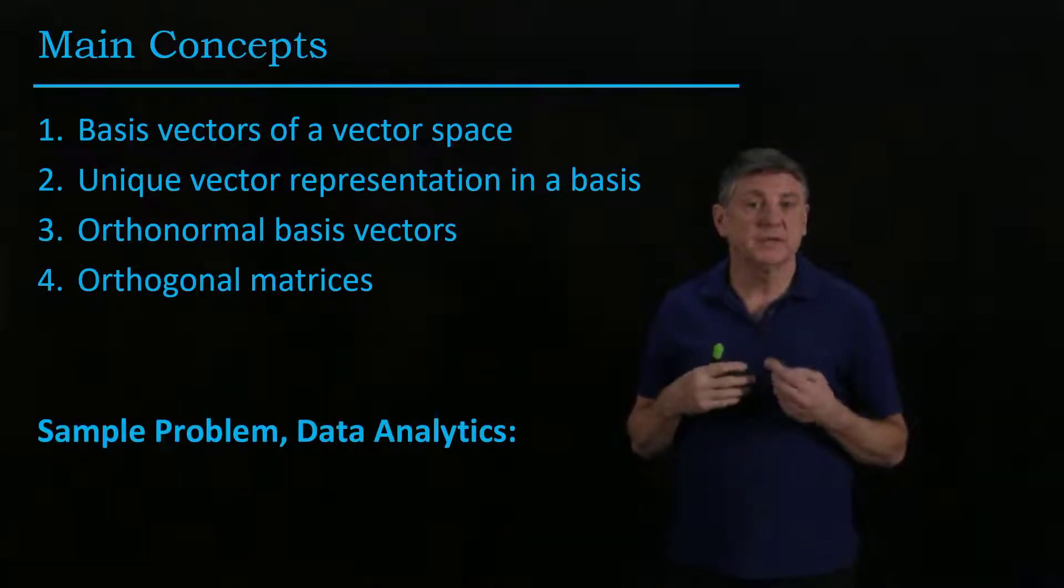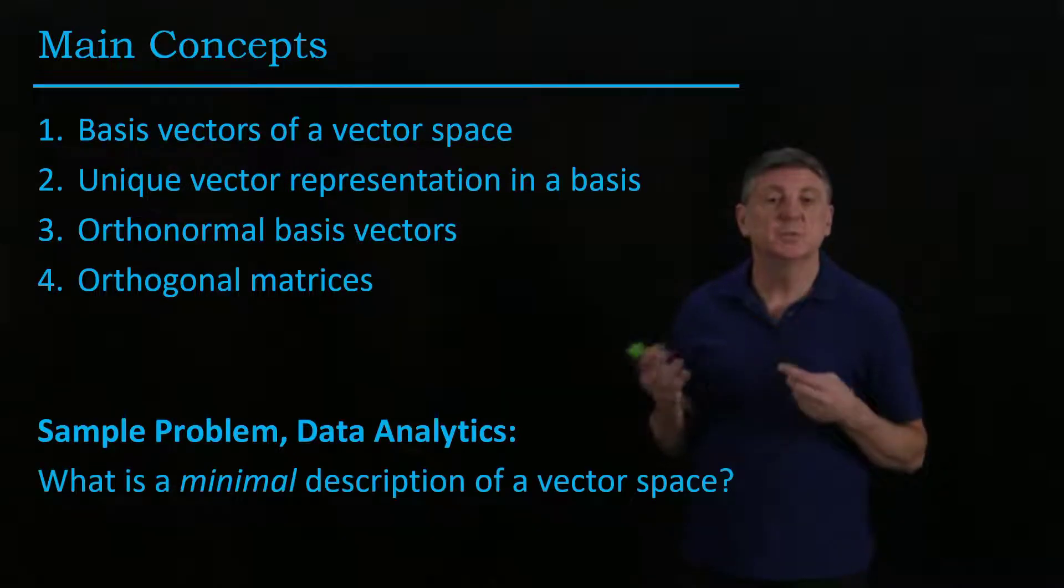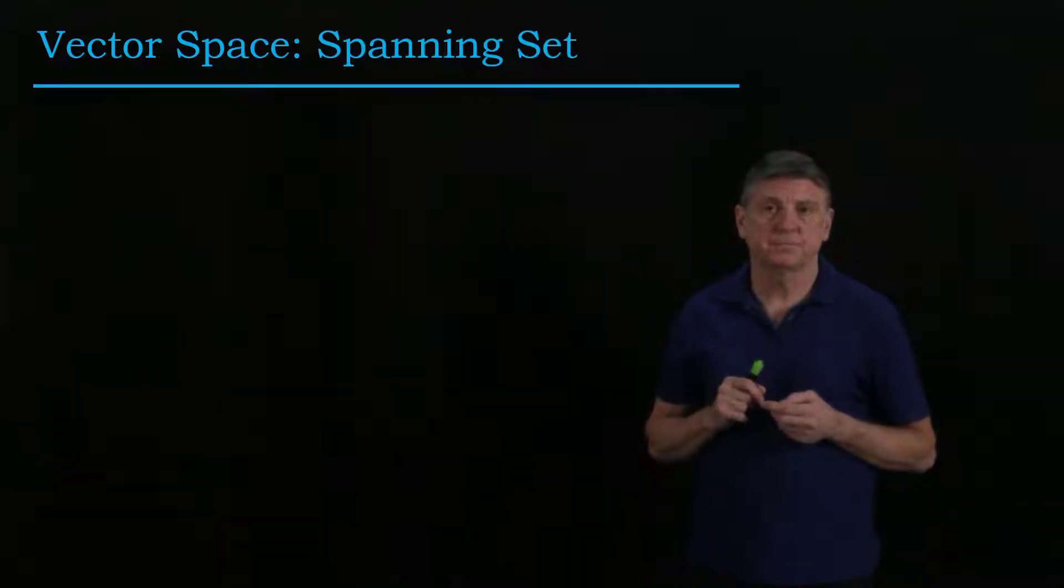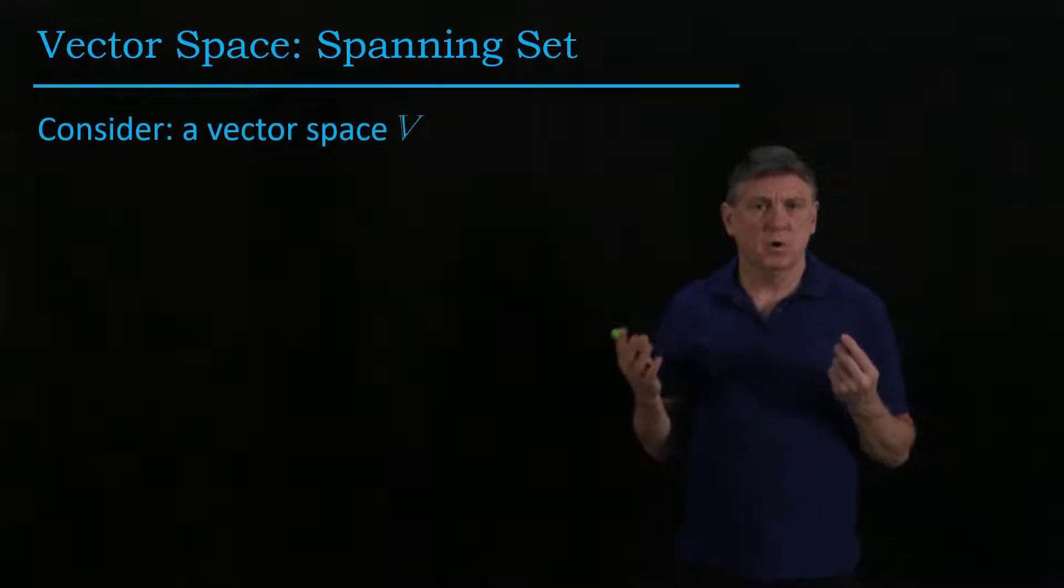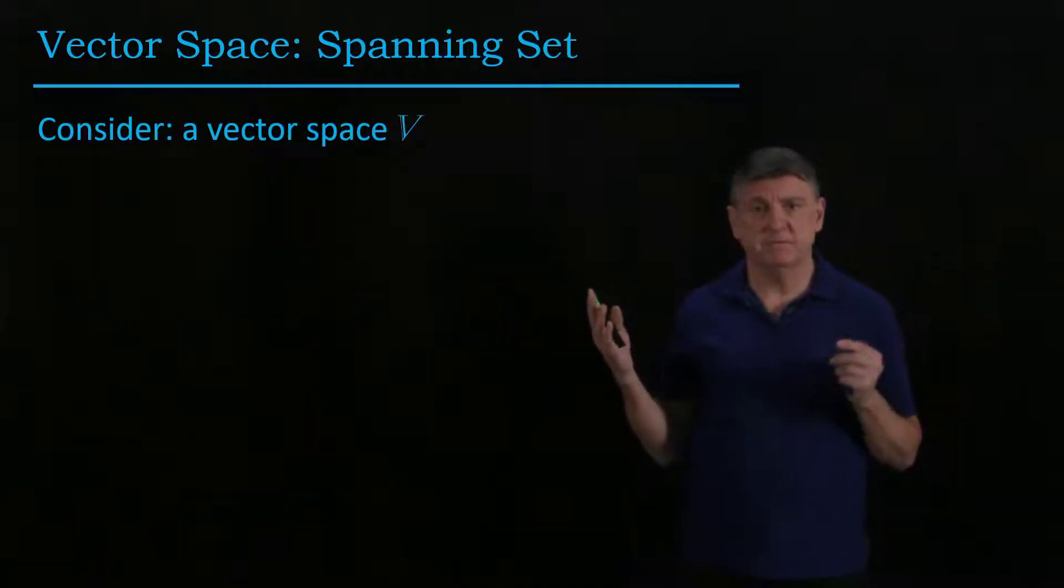One problem to consider is: what's a minimal description of a vector space? Let's recall what we mean by a spanning set. Suppose we have a vector space V.